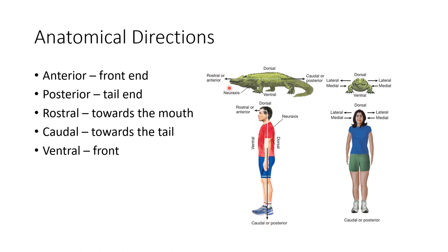Dorsal is the back portion of the organism. For the alligator, it's the actual back — the top portion. For the person, it is the back portion, including the heels, back of the head, and all the back portion of the body.